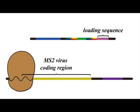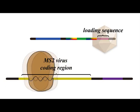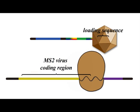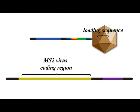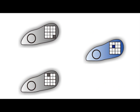At first, the MS2 virus coding region is translated and the coat proteins are produced. The region which we call the loading sequence attracts coat proteins of the virus and then the RNA is packaged. Then, this virus infects other E. coli.